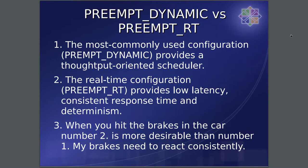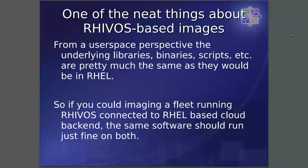I want to take a moment to explain the difference between the real-time kernel and the normal everyday kernel. The most commonly used kernel — preempt dynamic — provides a throughput-oriented scheduler. The real-time kernel is more focused on low latency, consistent response time, and determinism. A simple automotive analogy: when you hit the brakes in your car, the real-time approach is more desirable. If I hit the brakes in my car, I kind of like them to react consistently.